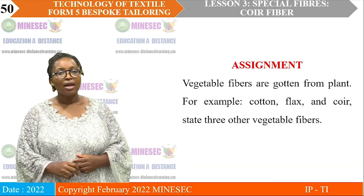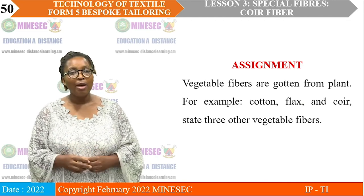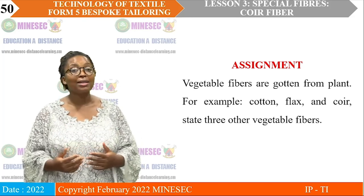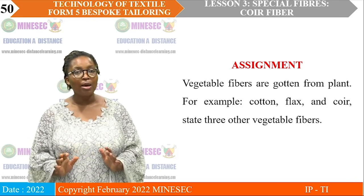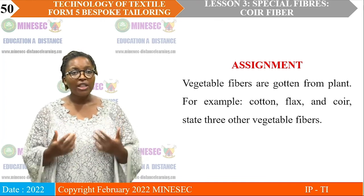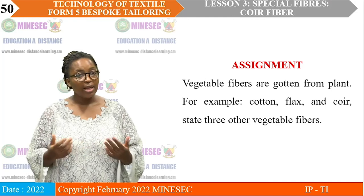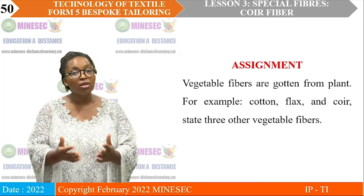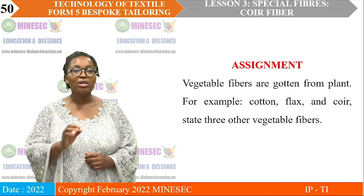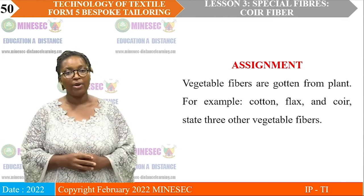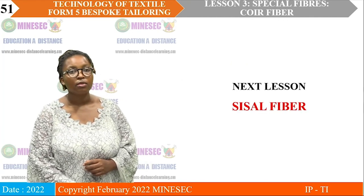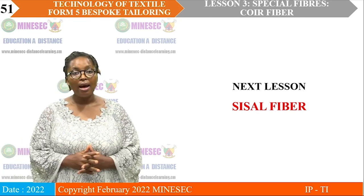I will give you an assignment to take home for the next lesson. Don't come without doing your assignment. The assignment is: vegetable fibers are gotten from plants — examples include cotton and Koi which we just learned about today. State three other vegetable fibers. Our next lesson will be on sisal fiber.